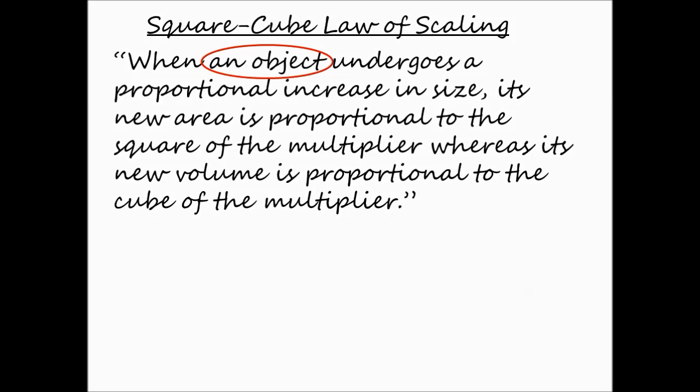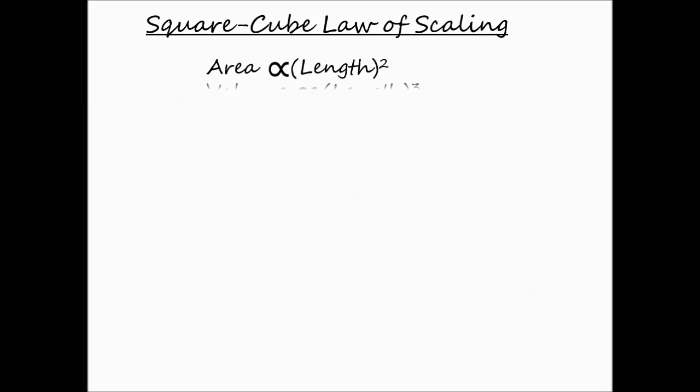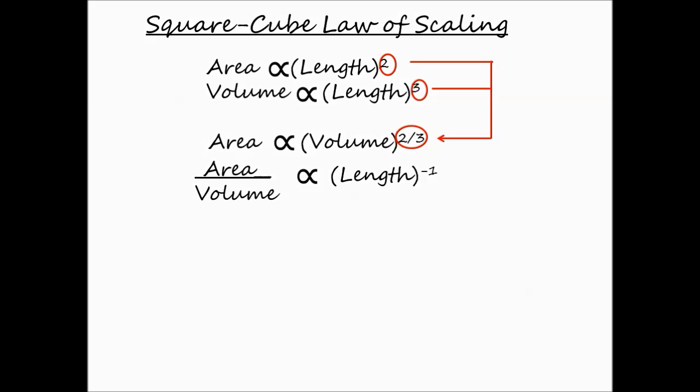The law applies to any object whether it's geometric, a banana or an octopus. The area goes as square whereas the volume goes as cube. Mathematically we can write it down as area proportional to length squared and volume to length cubed. We can combine these two to express area in relation to volume or the ratio of area to volume.